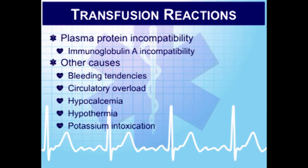Plasma protein incompatibility is due to incompatibility of immunoglobulin A. Signs and symptoms include abdominal pain, diarrhea, fever, chills, flushing, shortness of breath, and hypotension — the last two are the most concerning. Treatment includes oxygen, IV fluids, vasopressors, and steroids depending on the patient's presentation.